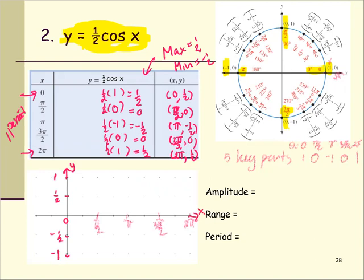At x equals zero the function value is one half, at pi over two it is zero, at pi it is negative one half, at three pi over two it is zero, and at two pi it is one half. We then connect all five points with a smooth curve.